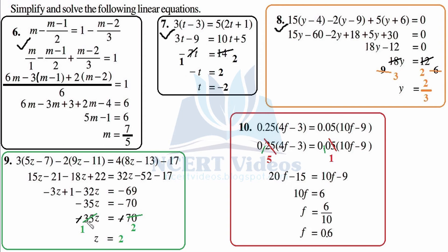We rewrote the equation so that you don't get puzzled. Minus cancels with minus. So we have 35z equals 70. We can cancel straight away: 1 times 35 is 35, 2 times 35 is 70. So z is positive and equals 2, which is the solution of our question number 9.